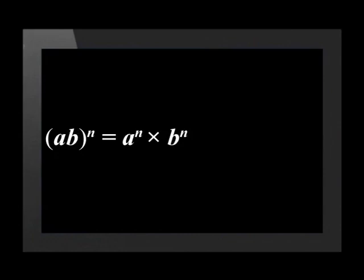Similarly ab raised to the power of n is equal to a to the power of n multiplied by b to the power of n. Each variable has to be raised to the power of n. Now let's do an example using this law.